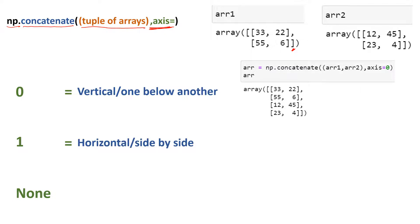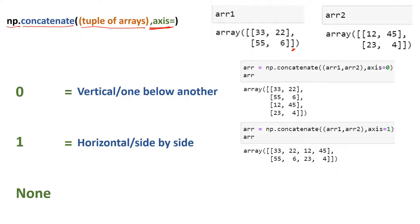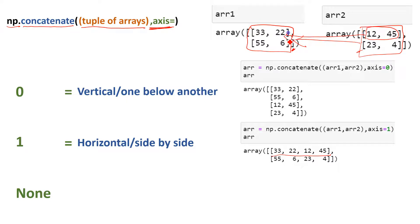The other value for axis is one, which means a horizontal join — it simply puts the arrays side by side. Looking at the example with the same arrays, it takes elements from each row of the first array and includes them alongside the corresponding row of the second array. So for every row, the elements are placed side by side. You can see it is taking 33 and 22 and putting them together, 12 and 45 together — a simple side-by-side join using axis=1.